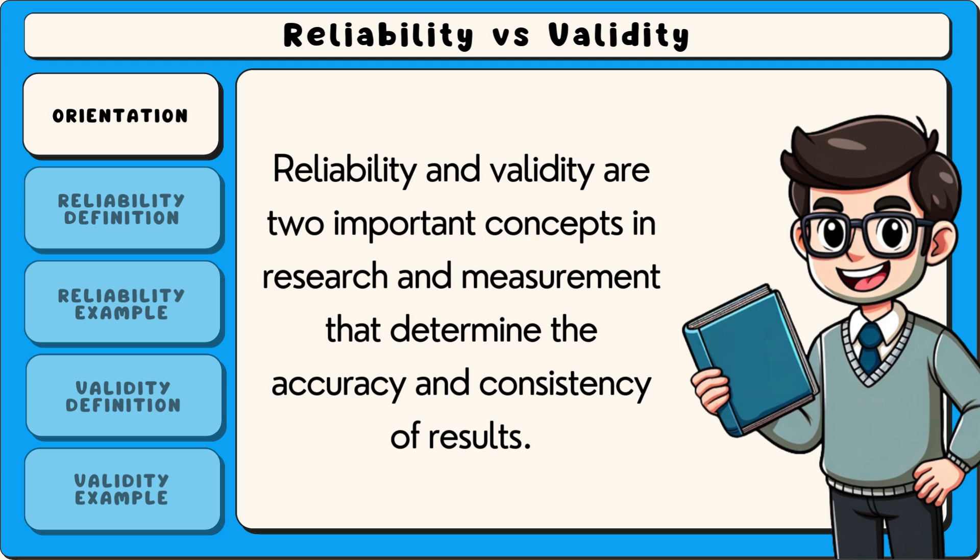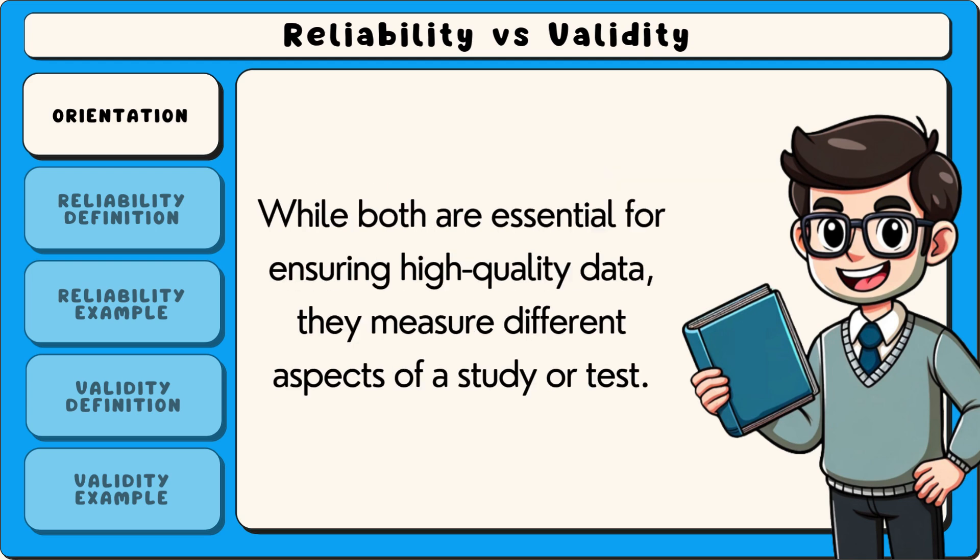Reliability and validity are two important concepts in research and measurement that determine the accuracy and consistency of results. While both are essential for ensuring high quality data, they measure different aspects of a study or test.